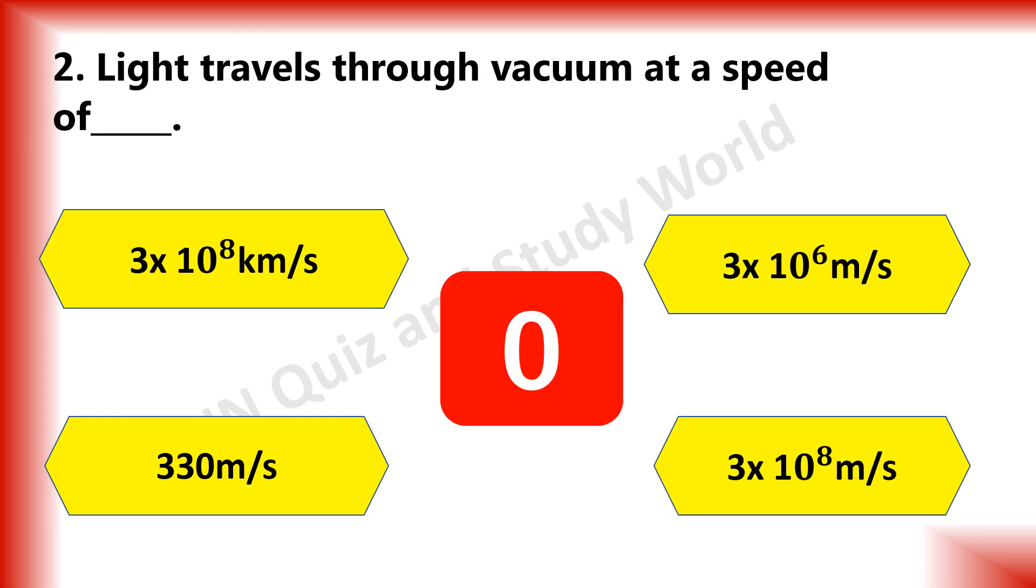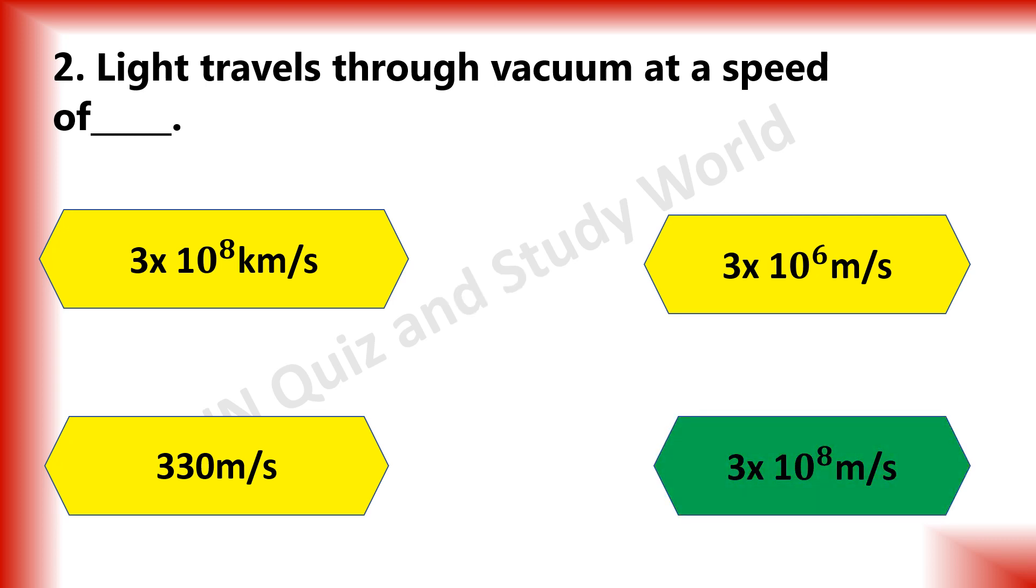Light travels through vacuum at a speed of dash. 3 x 10 raised to 8 km per second, 3 x 10 raised to 6 m per second, 330 m per second or 3 x 10 raised to 8 m per second. The answer is 3 x 10 raised to 8 m per second.